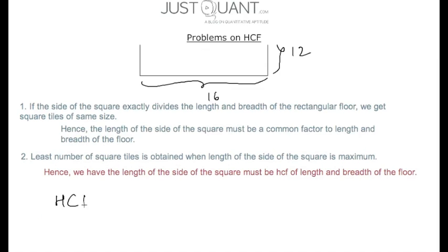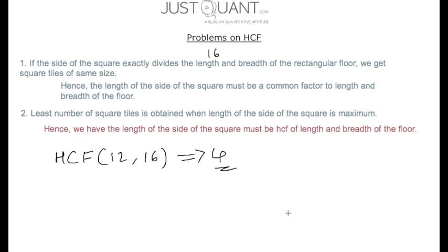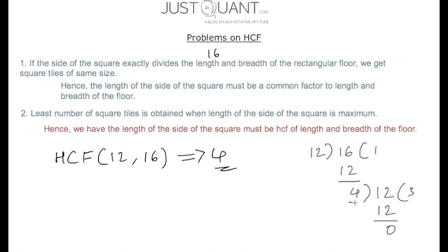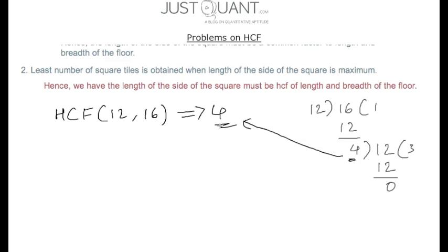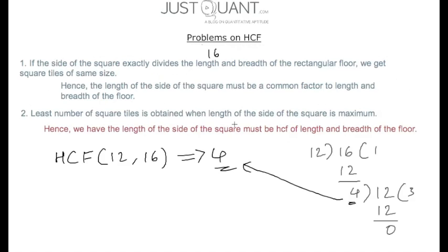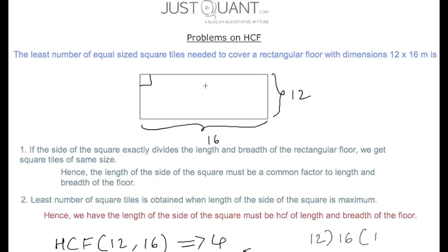The HCF of 12 and 16 — the breadth and length of the rectangle — is 4, which can be obtained by the division method. So the HCF of 12 and 16 is 4, which is the length of the side of the square.